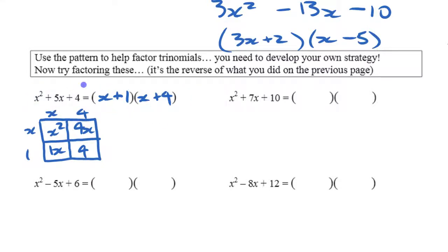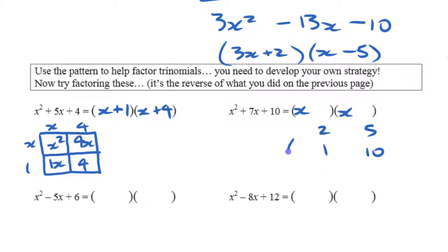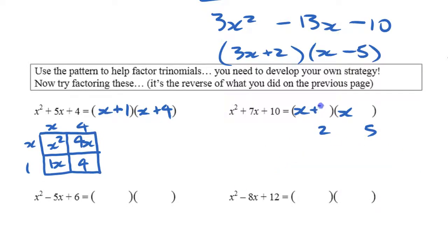Try x squared plus 7x plus 10. It starts with x squared, so it has to be x and x. If the last term is 10, the possibilities are two and five, or one and ten. With x plus one times x plus ten, you'd get plus one x plus ten x — that's eleven x, which is wrong. So it's x plus two times x plus five. Checking the middle term: plus two x plus five x gives the right middle term of plus seven x.